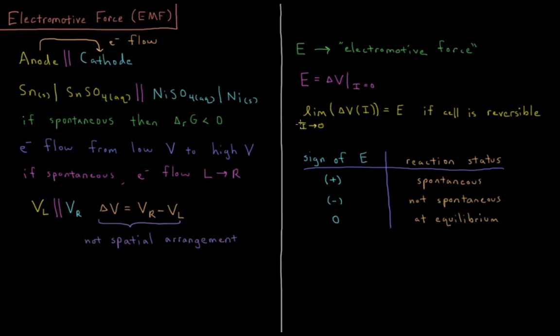The limit of the change in potential that the electrons experience as a function of their current, as that current goes to zero, is the electromotive force, and that's true if the cell is reversible. We can take a tiny amount of electrons, flow them this way, measure the EMF, take a tiny amount, flow them that way, measure it, make sure that it converges to the same value.